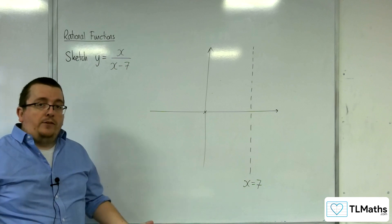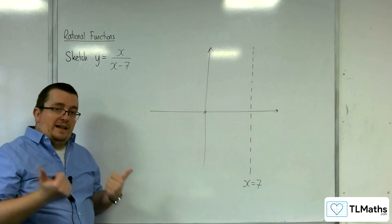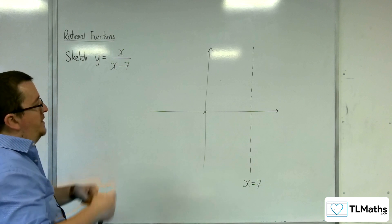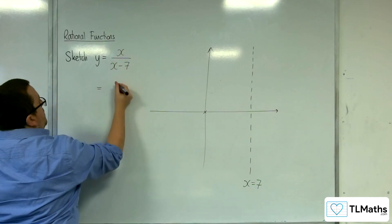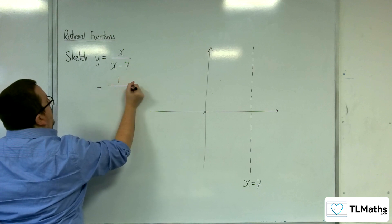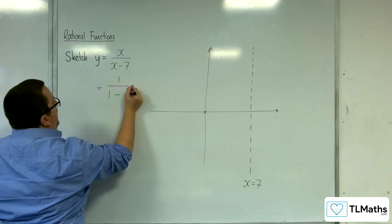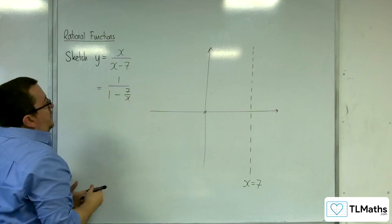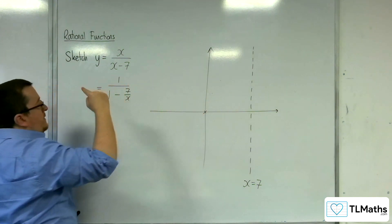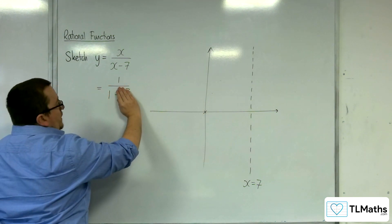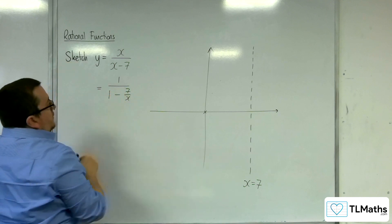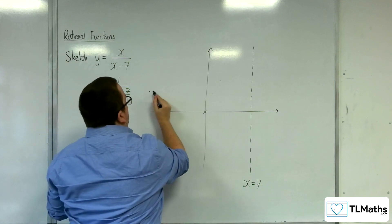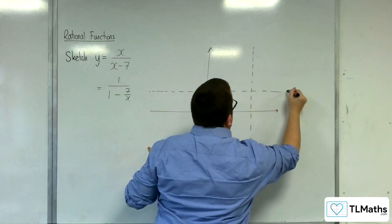So the only thing that we need to do next is to work out the horizontal asymptote. We've done the vertical one, now the horizontal asymptote. So you can divide top and bottom of your fraction by x, and we get 1 over 1 take away 7 over x. So as x gets larger and larger in either the positive or negative direction, the 7 over x will get smaller and smaller, and we will tend towards y equals 1 over 1. So y equals 1 is a horizontal asymptote.